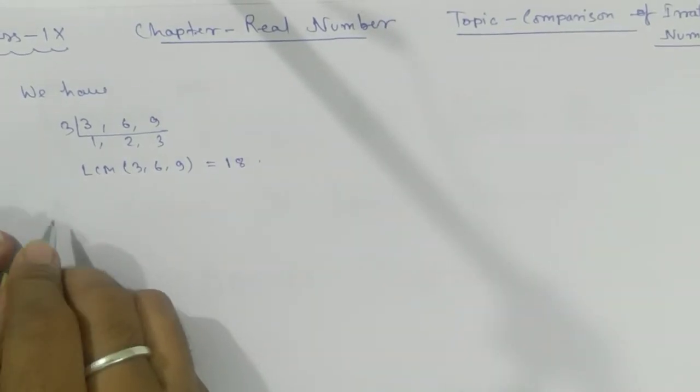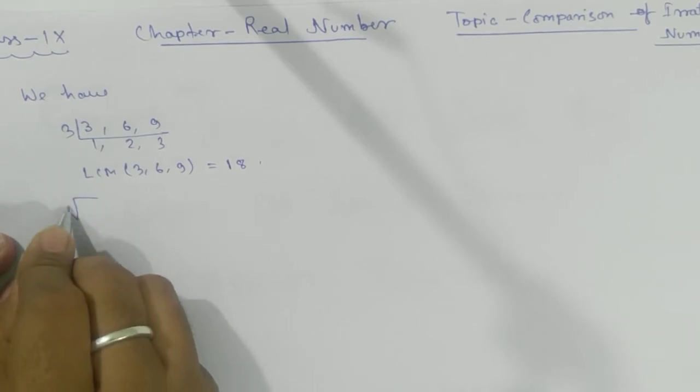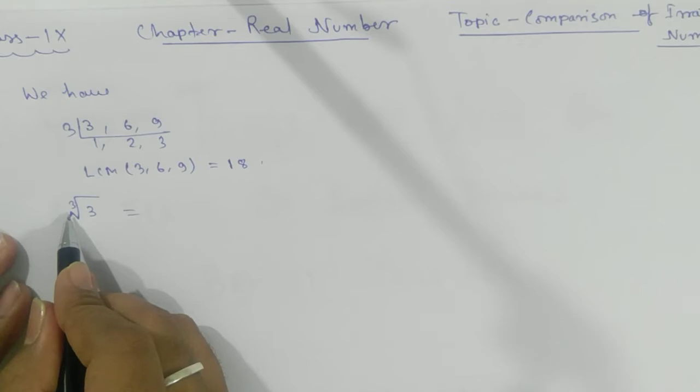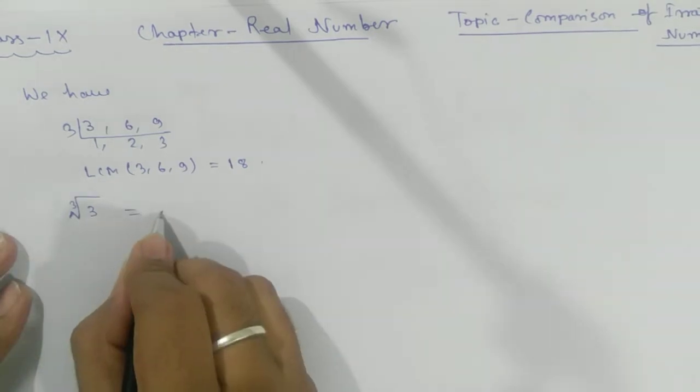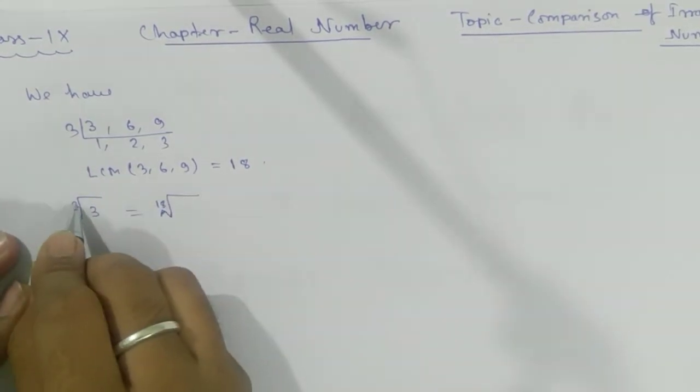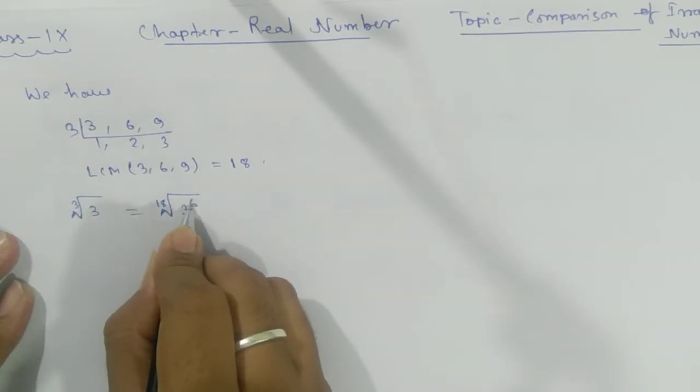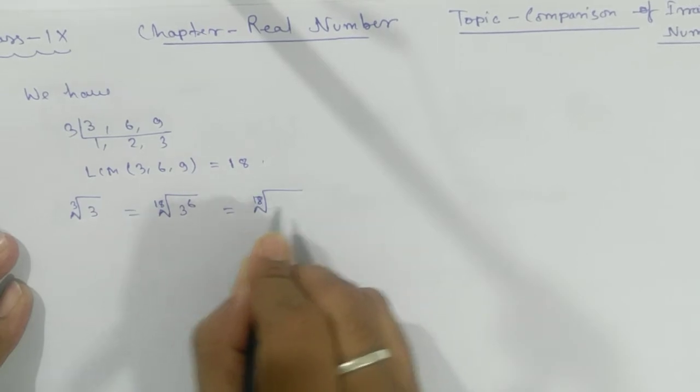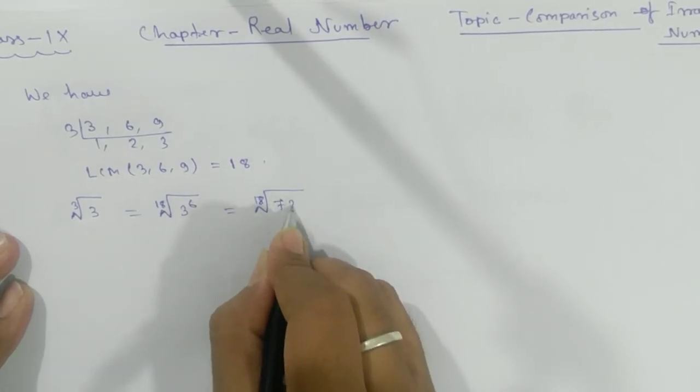Your first target: cube root of 3. To make this one 18, what we're going to multiply? You need to multiply by 6. That means keep it here 18, you have to multiply by 6. That means you need to take here power 6 and this will give you 18th root of 7 to the power 6.